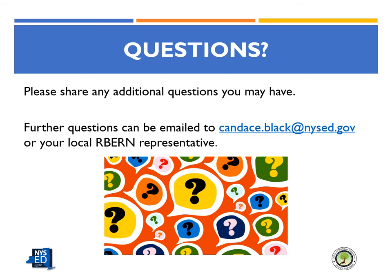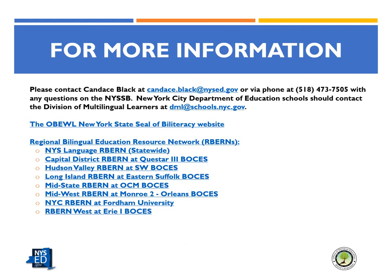Further questions can be emailed to candace.black@nysed.gov or your local RBERN representative. For more information on the SEAL, you can contact us at the previously mentioned email or via phone at 473-7505. We can also arrange for a virtual or in-person visit to a school to meet with your SEAL of Biliteracy Committee. New York City DOE schools should contact the Division of Multilingual Learners at dml.schools.nyc.gov. The OBEWL New York State SEAL of Biliteracy website has a wealth of information and is accessible at www.nysed.gov by typing SEAL of Biliteracy into the search bar. Every region of New York is serviced by one of eight Regional Bilingual Education Resource Networks (RBERNs), which can provide local support for a SEAL of Biliteracy program.